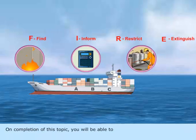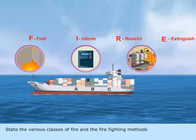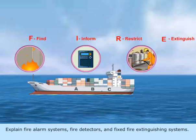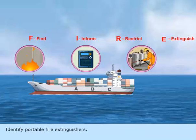On completion of this topic, you will be able to explain the fire chemistry, recognize the fire hazards, describe how fires start and spread, state the various classes of fire and their firefighting methods, describe how ship structures are designed to prevent the spread of fire, explain fire alarm systems, fire detectors and fixed fire extinguishing systems, identify portable fire extinguishers and realize the shipboard firefighting organization.